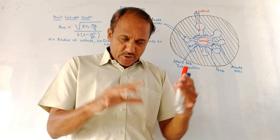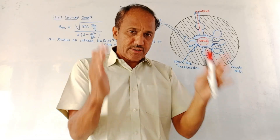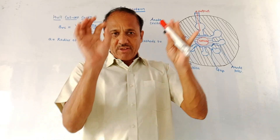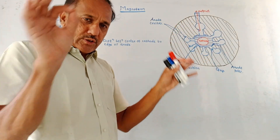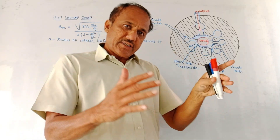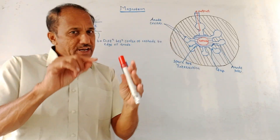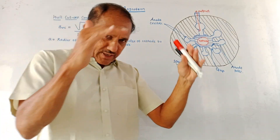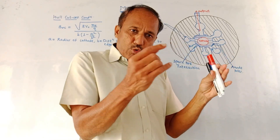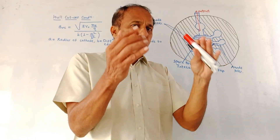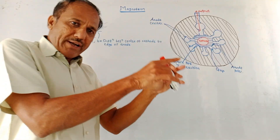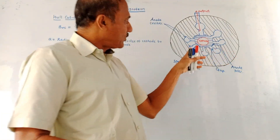The cathode emits electrons and their motion is affected by both electric and magnetic fields. When the magnetic field is zero, the motion of electrons is along a straight line from cathode to anode. But in the presence of a magnetic field, bending of the path takes place — the direction of electron motion from cathode to anode gets bent, producing curved paths.